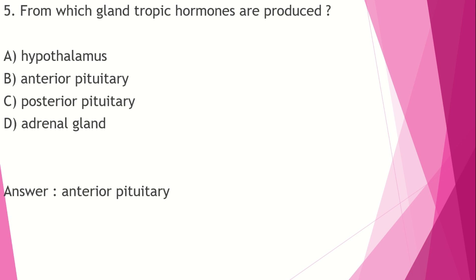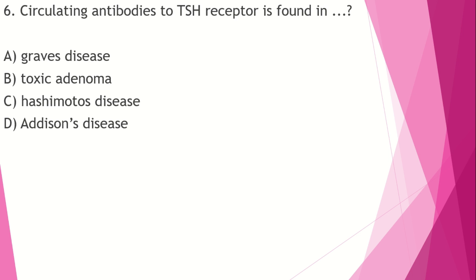Circulating antibody to TSH receptors is found in: Option A: Graves' disease. Option B: Toxic Adenoma. Option C: Hashimoto's disease. Option D: Addison's disease. The answer is Graves' disease. In Graves' disease, TSH receptor-binding mimicking antibodies cause hyperthyroidism. Addison's disease is an autoimmune disorder more common in women, associated with aldosterone deficiency.